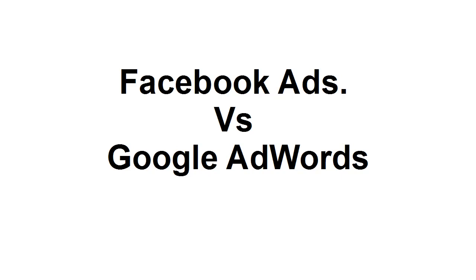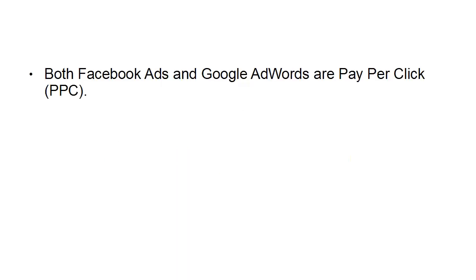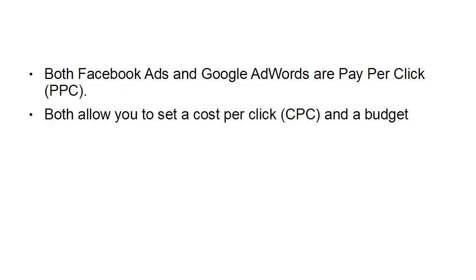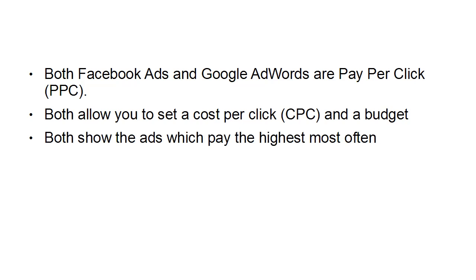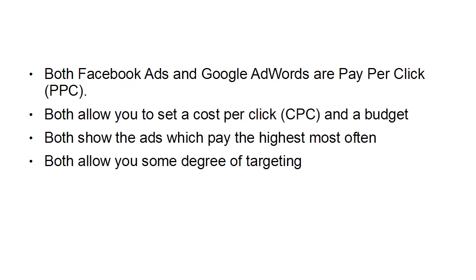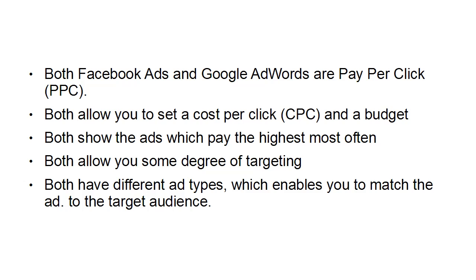What's the difference between advertising via Facebook Ads and advertising via Google AdWords? Well, there are certain similarities. First of all, both Facebook Ads and Google AdWords are pay-per-click, or PPC. Facebook does have a PPC option, and both allow you to set a cost-per-click, otherwise known as a CPC, and a budget. Both will show ads which pay the highest most often, both allow you some degree of targeting, and both have different ad types which enable you to match the ad to the target audience.